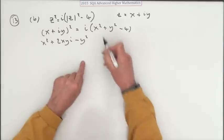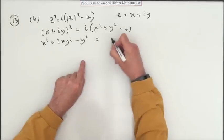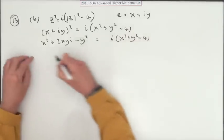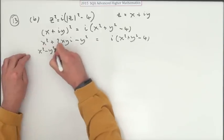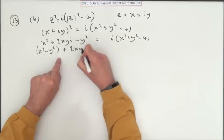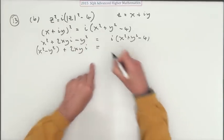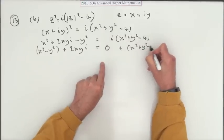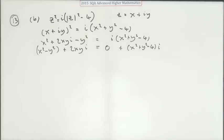And that's x² + 2xy·i - y² equals this. I'll just leave that the way it is. So x² - y² is the real part and 2xy·i is the imaginary part. So here I've got no real part and x² + y² - 4 is imaginary part.